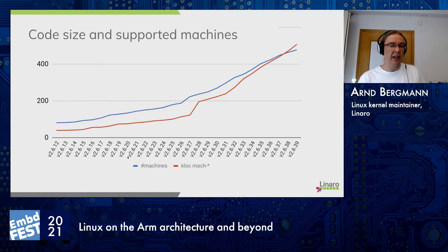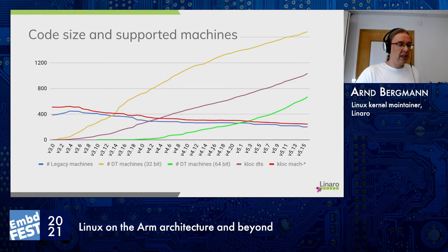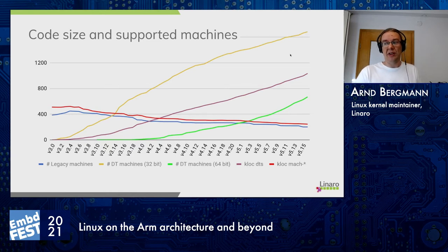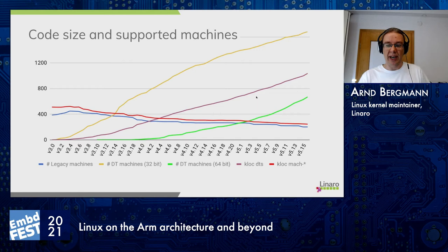Going back to this slide — where did we end up stopping that exponential code growth? The code, as you can see in the red line, has continuously gone down and is still going down after the introduction of device trees. The number of machines — the green line for 64-bit and yellow for 32-bit — is still growing exponentially. The 32-bit machines are growing more slowly, but 64-bit are catching up. We now have pretty much just linear growth in the number of lines in device tree files, so the goal of stopping code growth has been pretty much achieved.